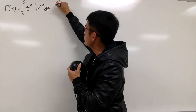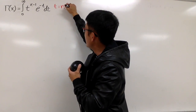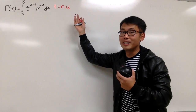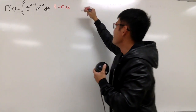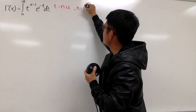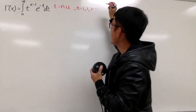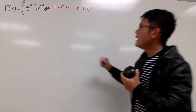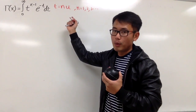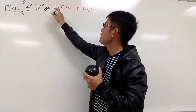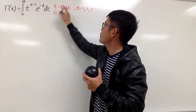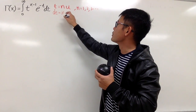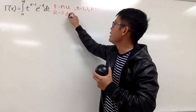We'll do t equal to n times u — where n is just the positive whole numbers. And we'll just differentiate both sides so that we can get dt. We get dt equal to n — since n is just a constant, it stays — multiplied by du.